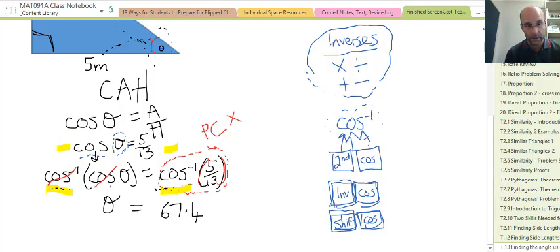So we can say that the angle theta is 67.4 degrees. I've just put the degree symbol on there. So that angle that we were looking for, we know what that is now.